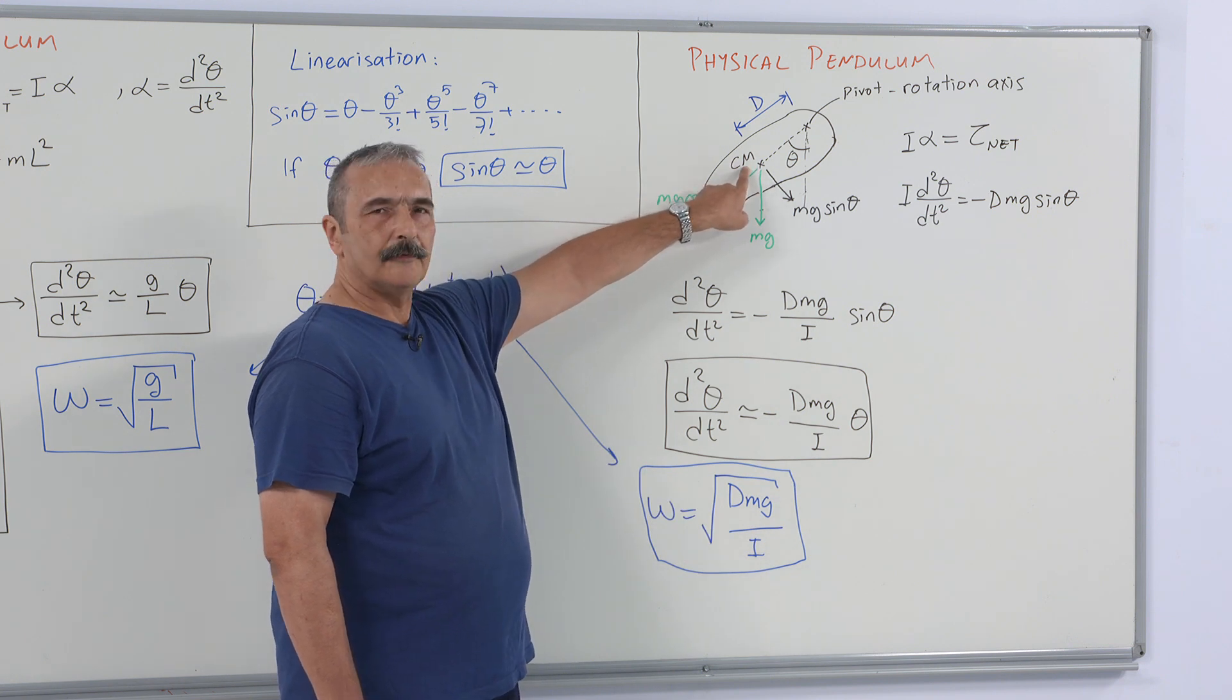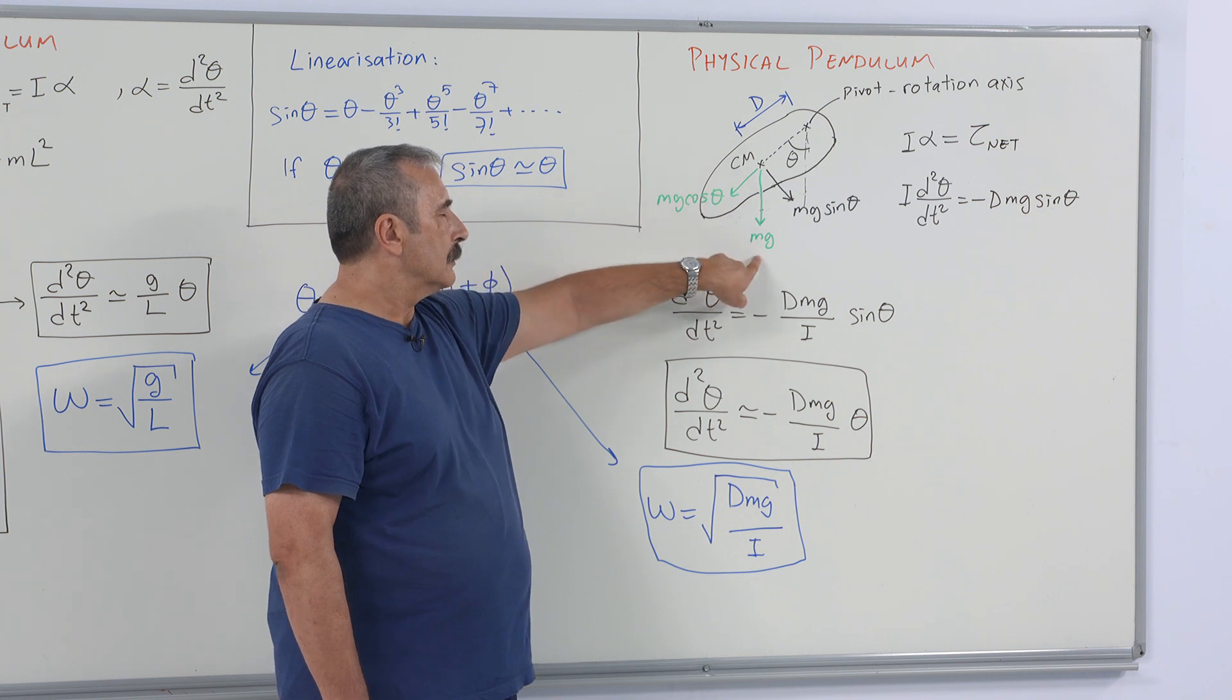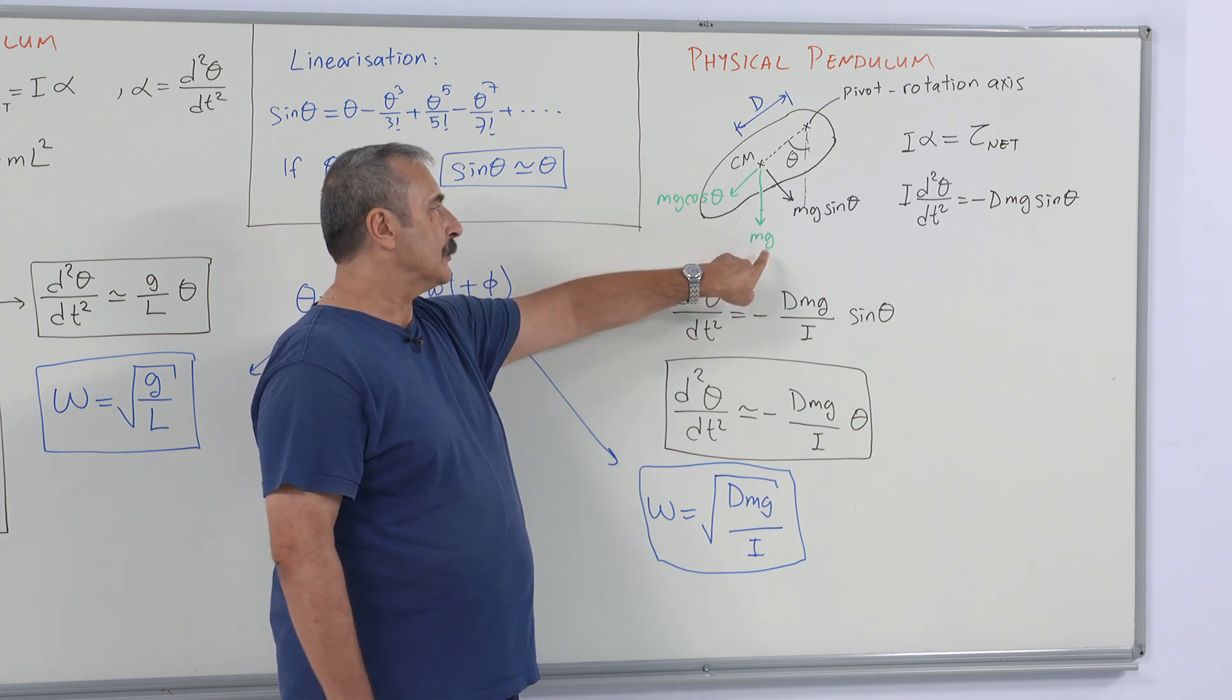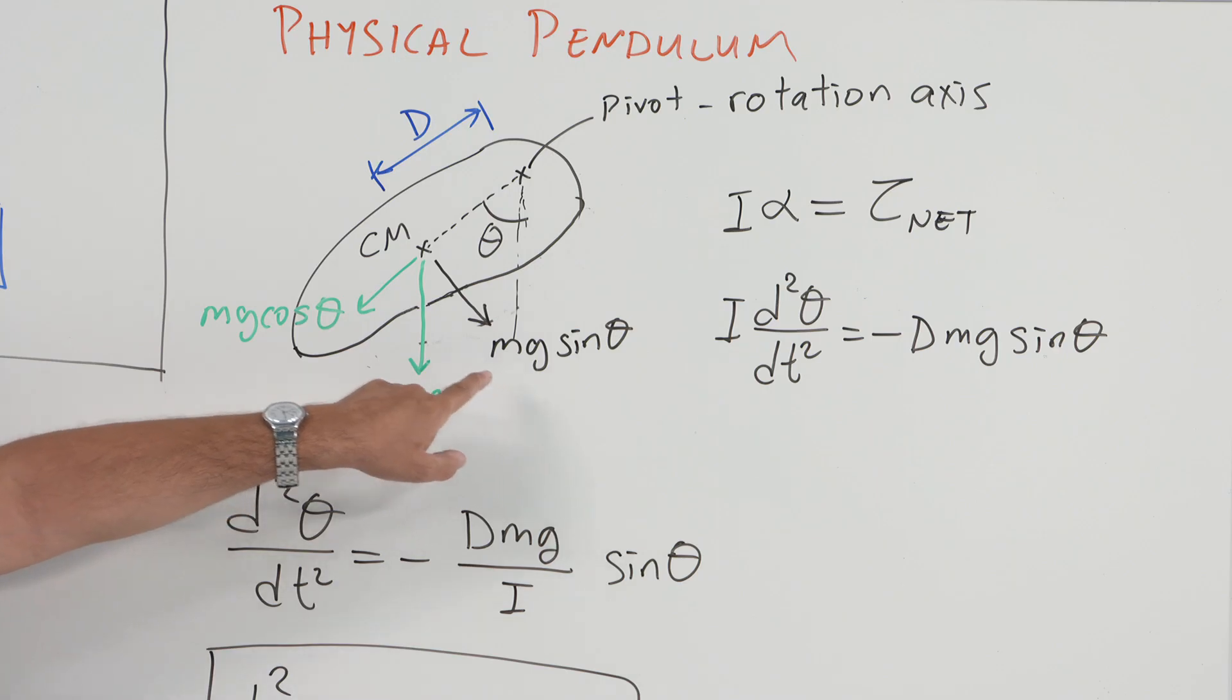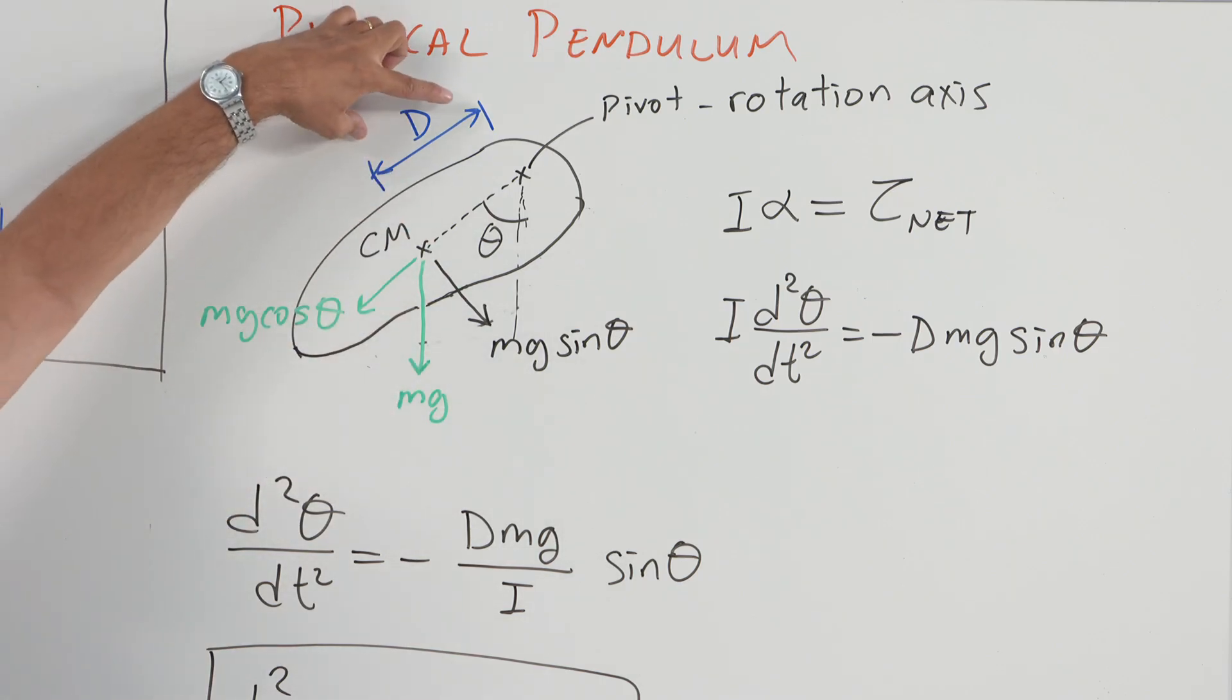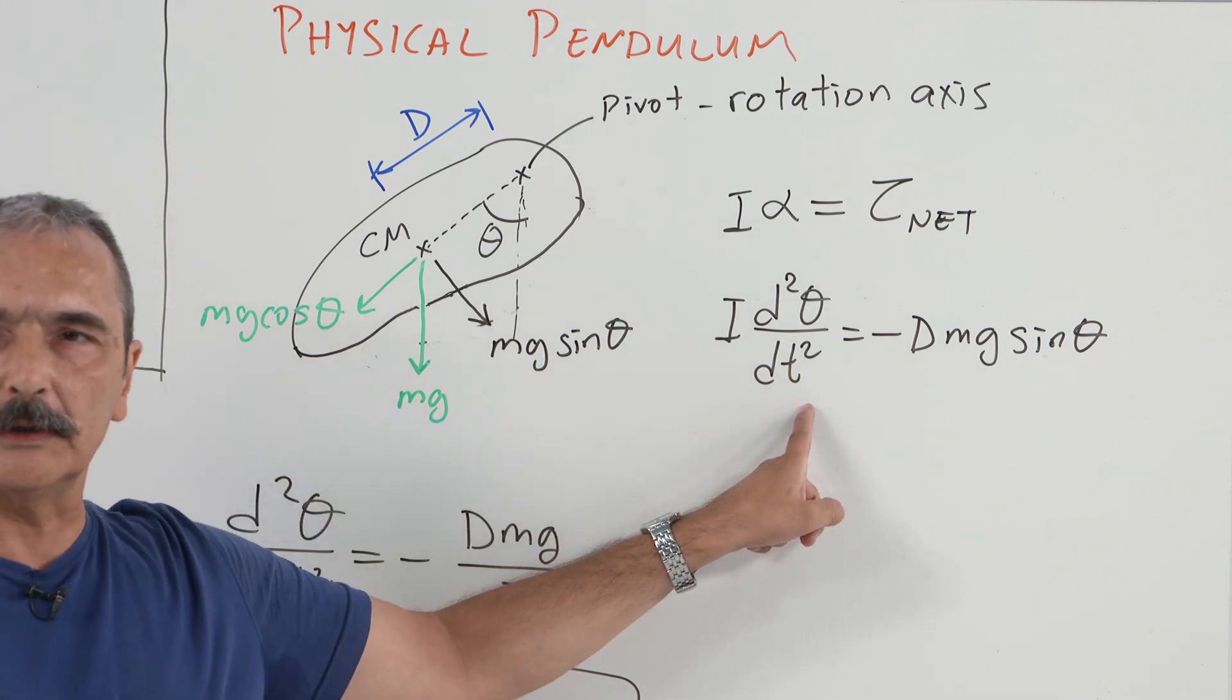Here's the center of mass of the rigid object. Gravity acts, as an approximation, to the center of mass by mg. Then torque is applied by the gravity onto the rigid object as d times mg sine theta. So again, we construct the torque equation.